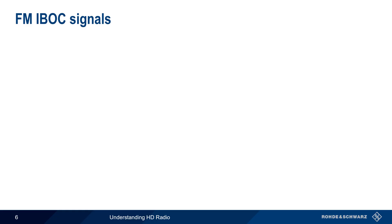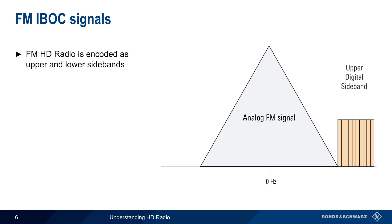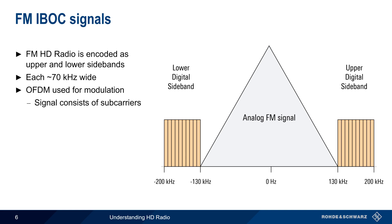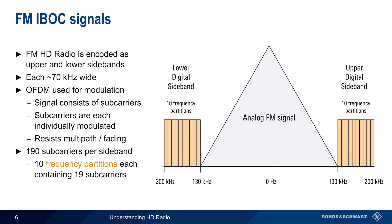Now let's look more closely at how IBOC signals are structured, starting with the more common FM signals. FM HD radio signals are encoded in the form of an upper and a lower sideband, each approximately 70 kHz wide. These digital sidebands are modulated using OFDM, or Orthogonal Frequency Division Multiplexing. At a very high level, OFDM means that the signal consists of numerous subcarriers, each of which is individually modulated. One of the advantages of OFDM is greater resistance to multipath and fading compared to analog modulation. There are 190 subcarriers in each subband, and these are grouped into 10 frequency partitions of 19 subcarriers each. 18 of the subcarriers are used to carry data, and one is used as a reference for demodulation.